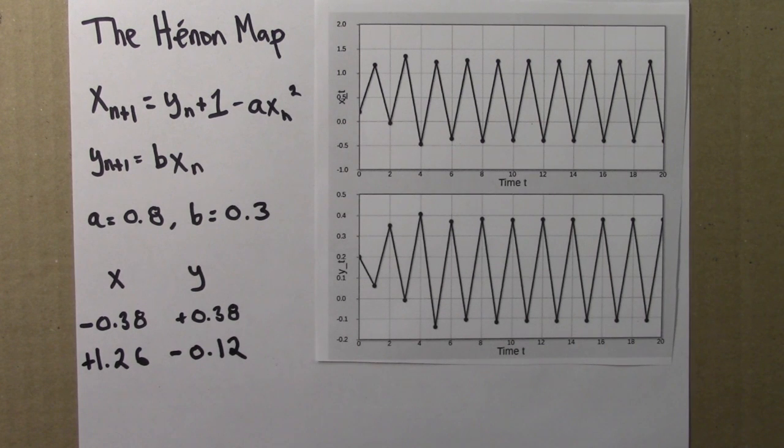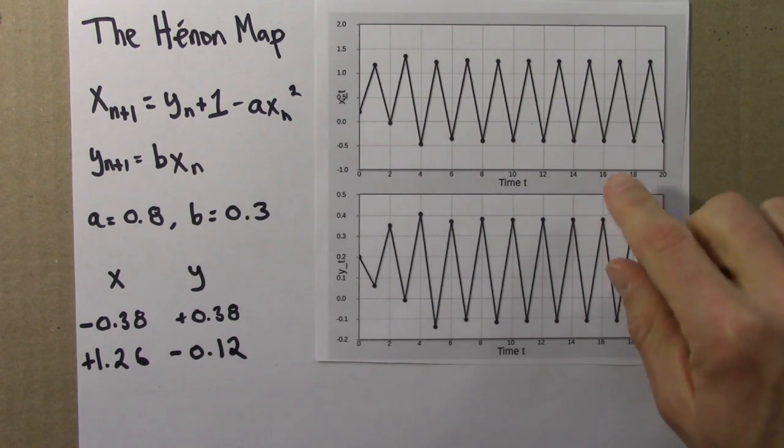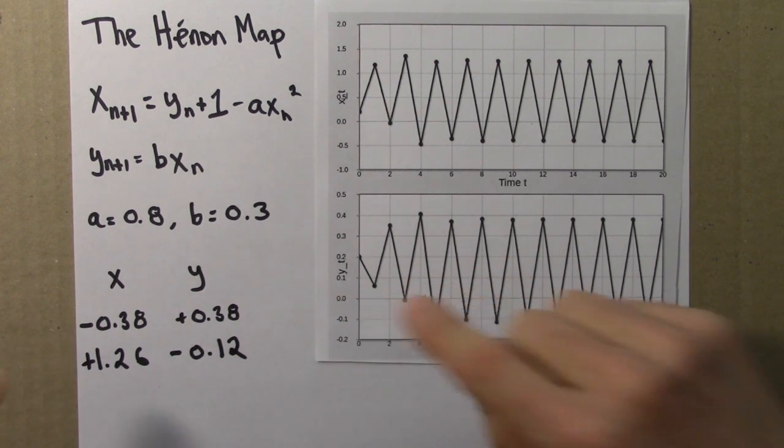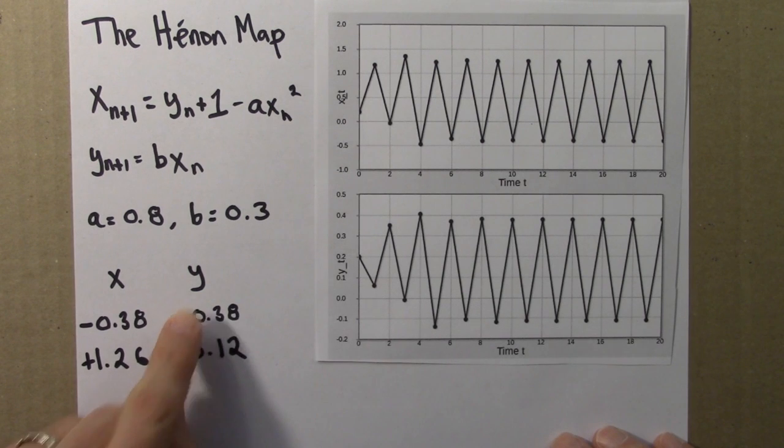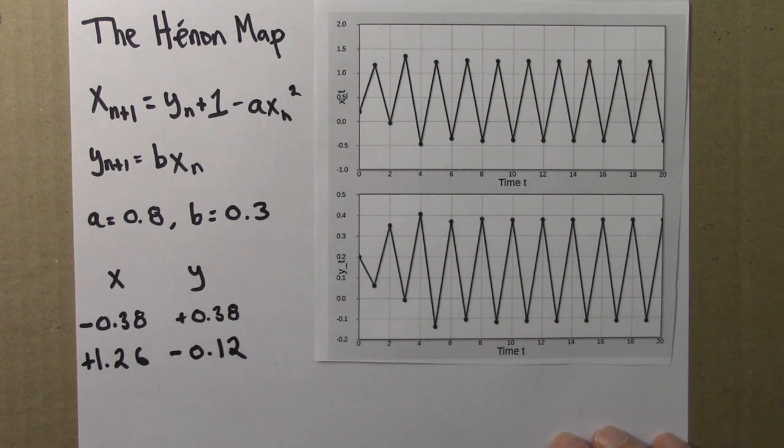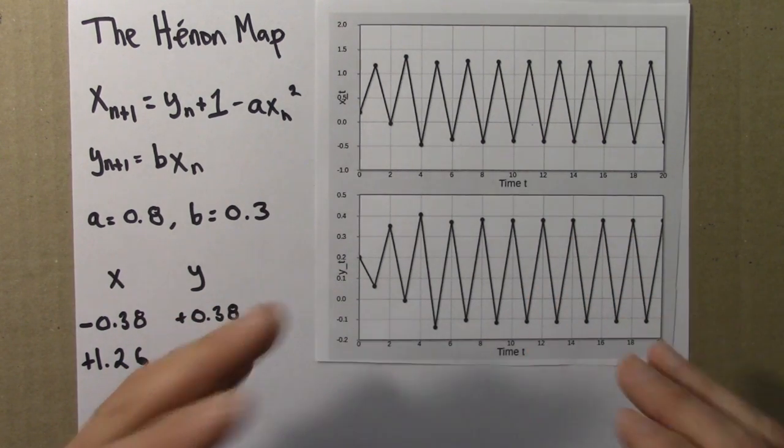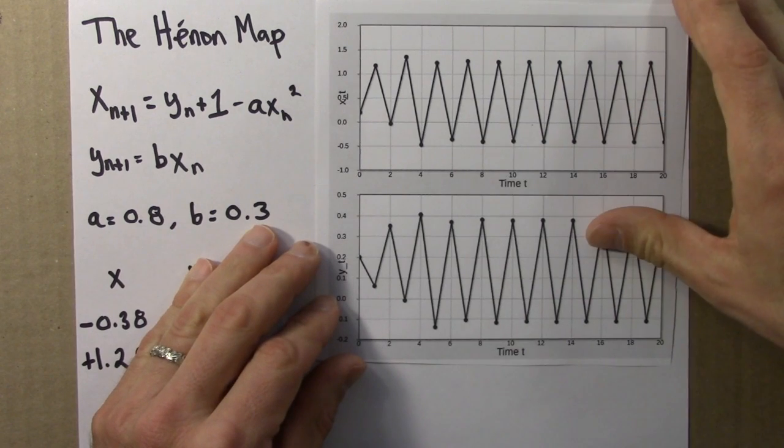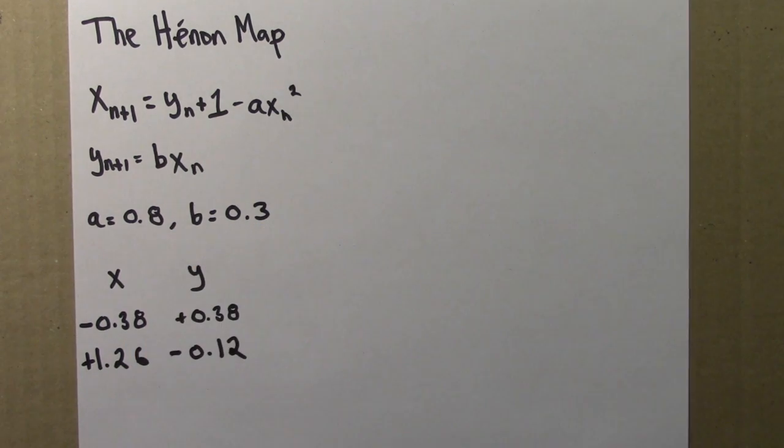So the points are oscillating between this and this, back and forth between this and that. So I could draw a final state diagram, like we did for the logistic equation, but now the final state diagram is two-dimensional, because you have x and y, instead of just x. For periodic behavior on the logistic equation, the final state diagram was two points on a line, here the final state diagram will be two points on a plane.